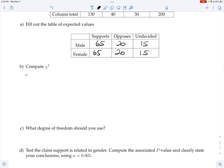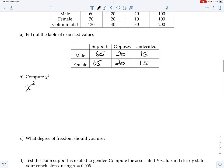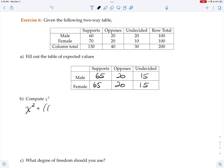When you compute the chi-squared statistic, remember it's observed minus expected. For the first cell, male supports, we had 60 observed minus 65 expected, square the difference and divide by 65.